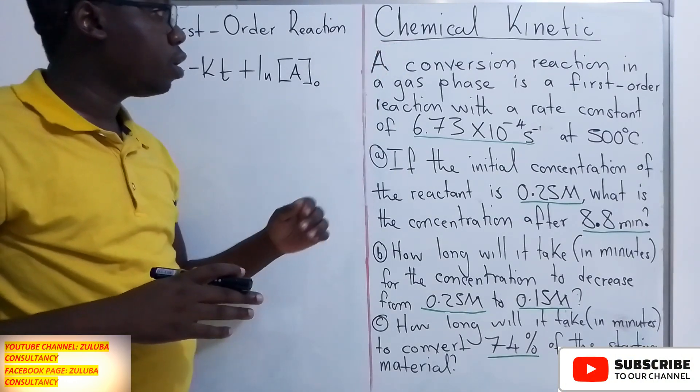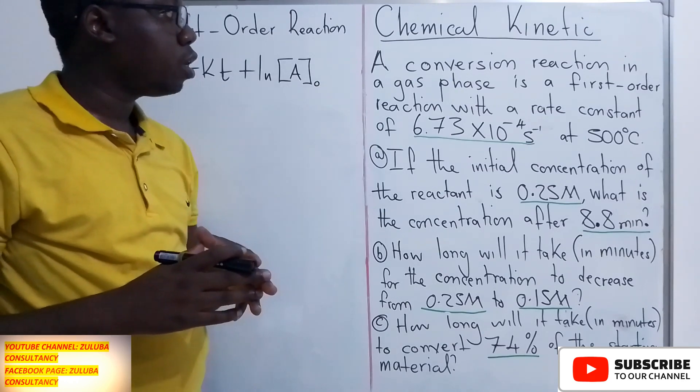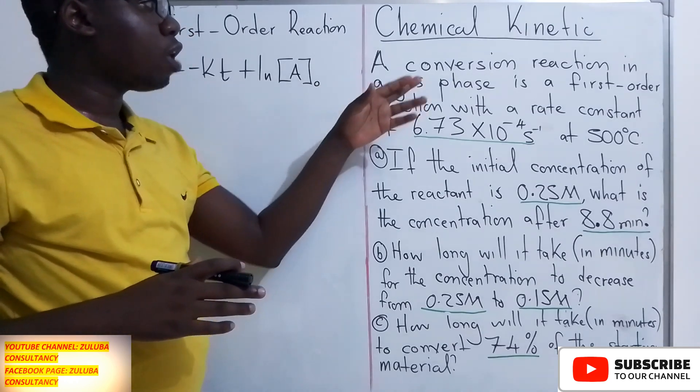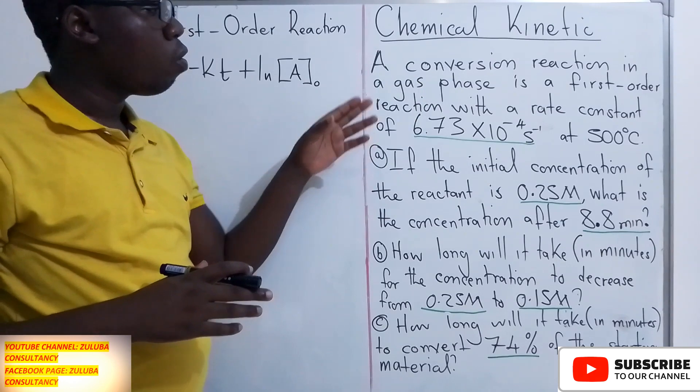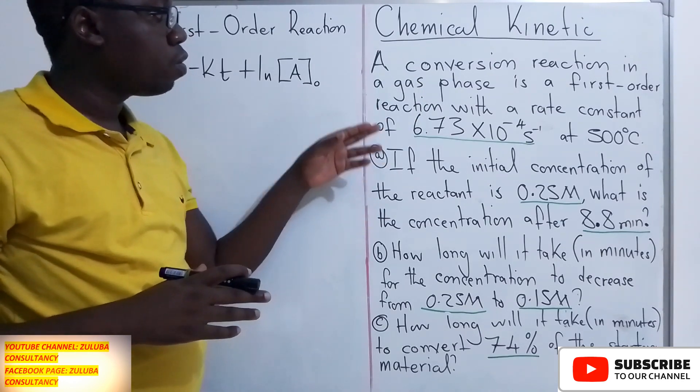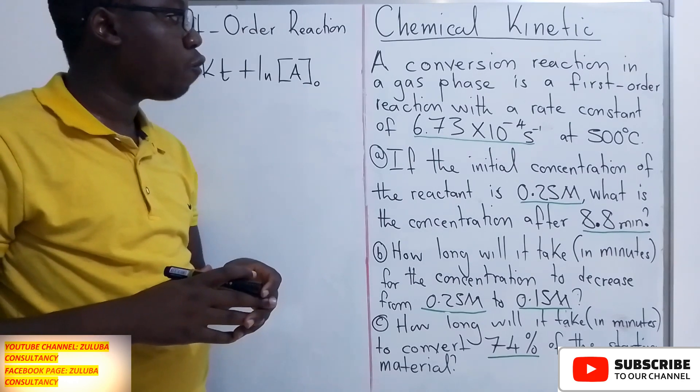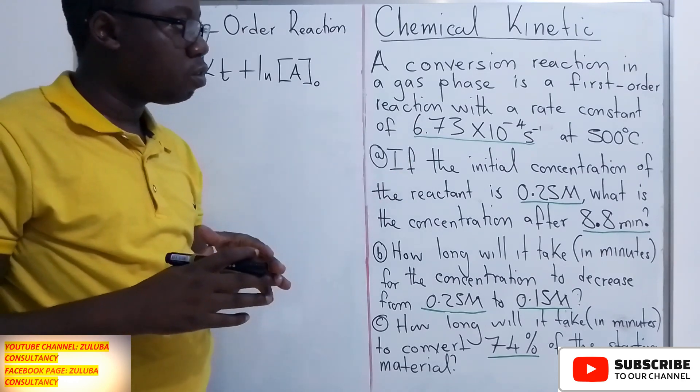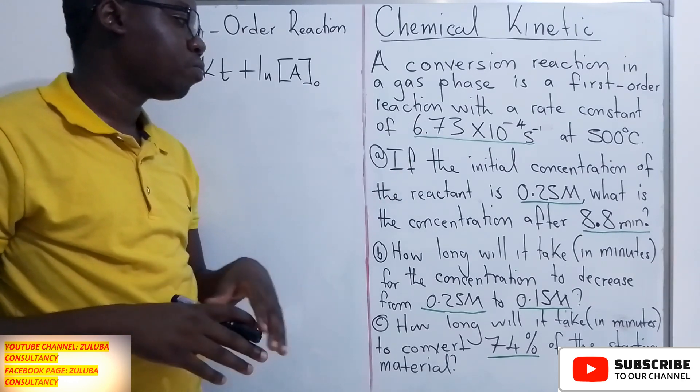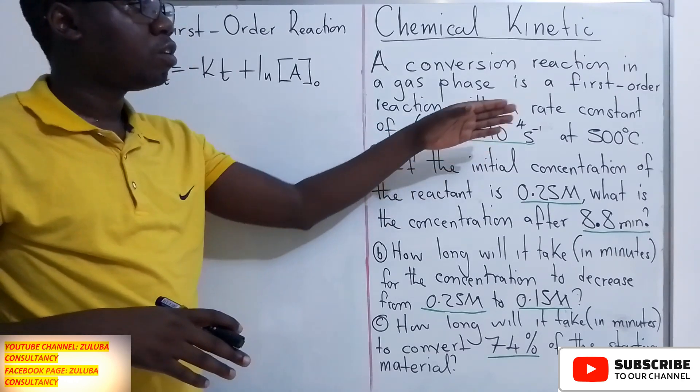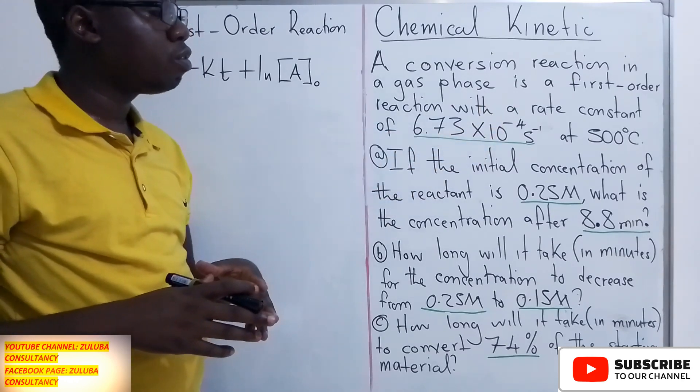The question reads: a conversion reaction in a gas phase is a first-order reaction with a rate constant of 6.73 × 10^-4 s^-1 at 500 degrees Celsius.